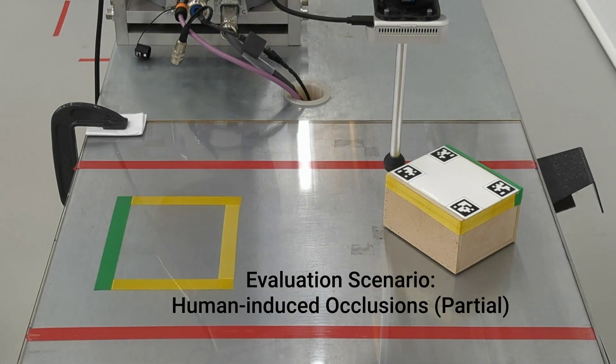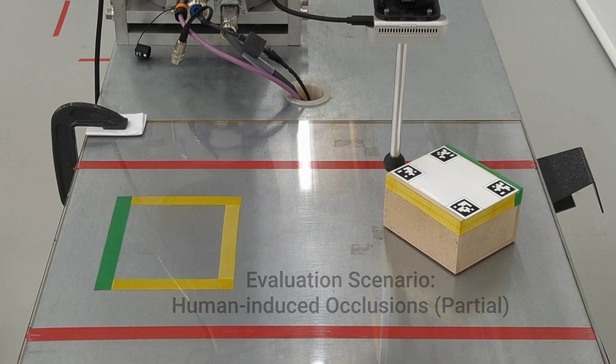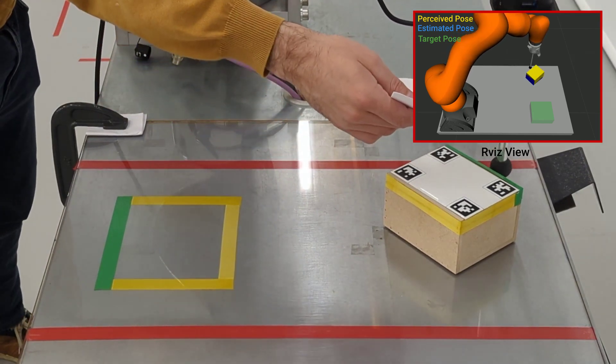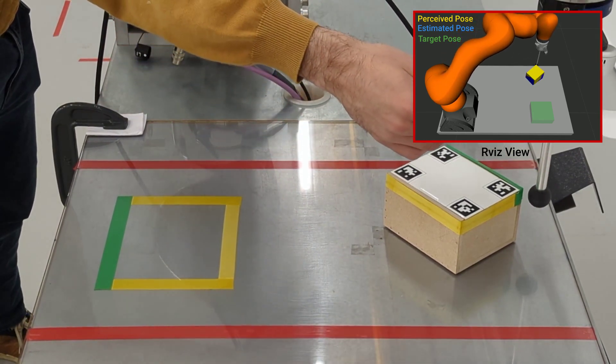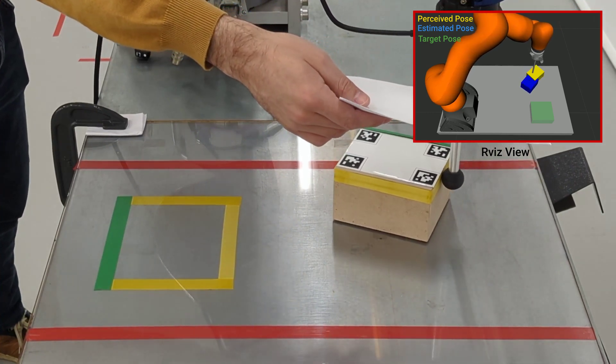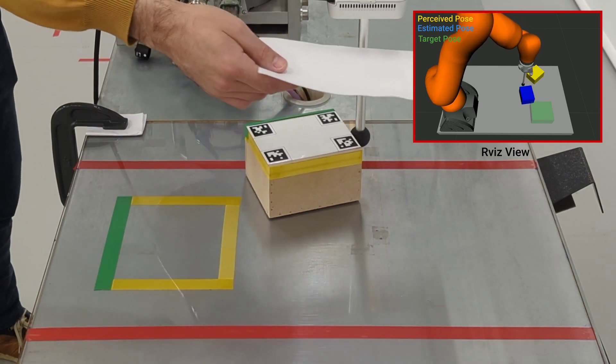Our second evaluation scenario considers longer human-induced occlusions. The robot successfully leverages the force sensing to estimate the object pose even in the case of complete visual occlusions, being able to solve the task with smooth motions.